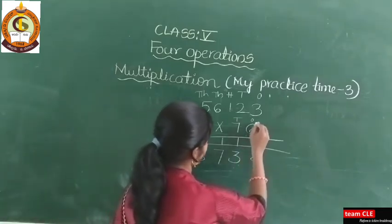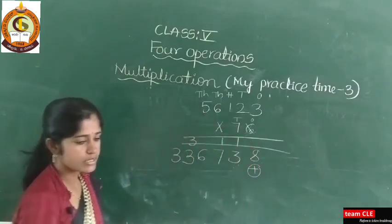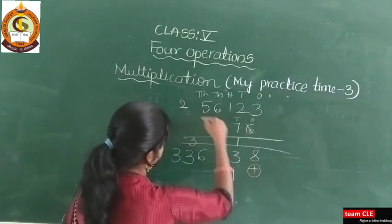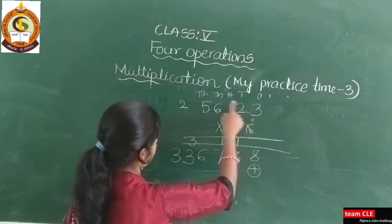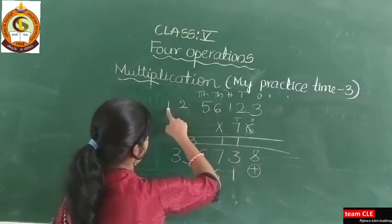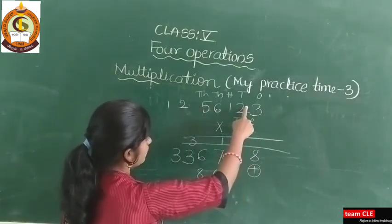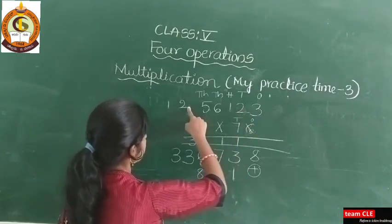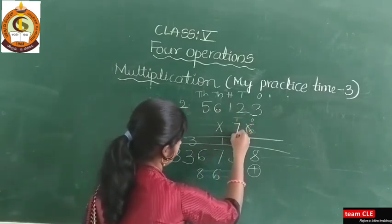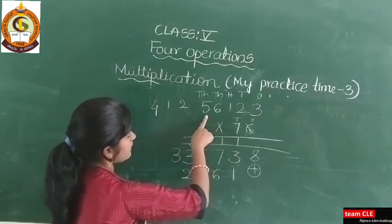Now the six is done. Next, the remaining multiplier digit is 7 — so multiply with 7, leaving one place. Seven threes are 21 — carry 2, write 1. Seven twos are 14, plus 2 is 16 — carry 1, write 6. Seven ones are 7, plus 1 is 8. Seven sixes are 42 — carry 4, write 2. Seven fives are 35, plus 4 is 39.